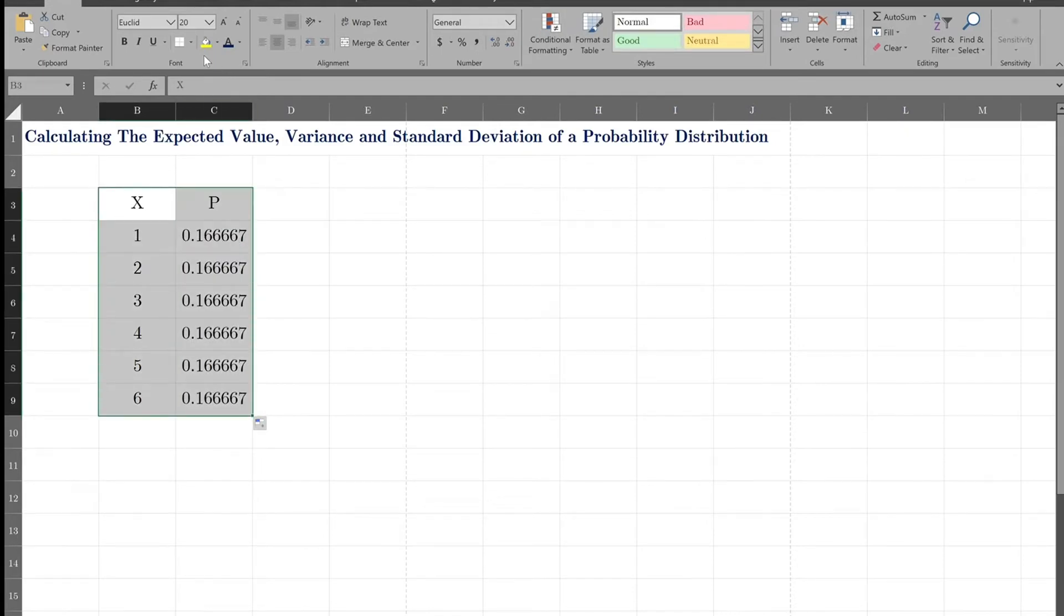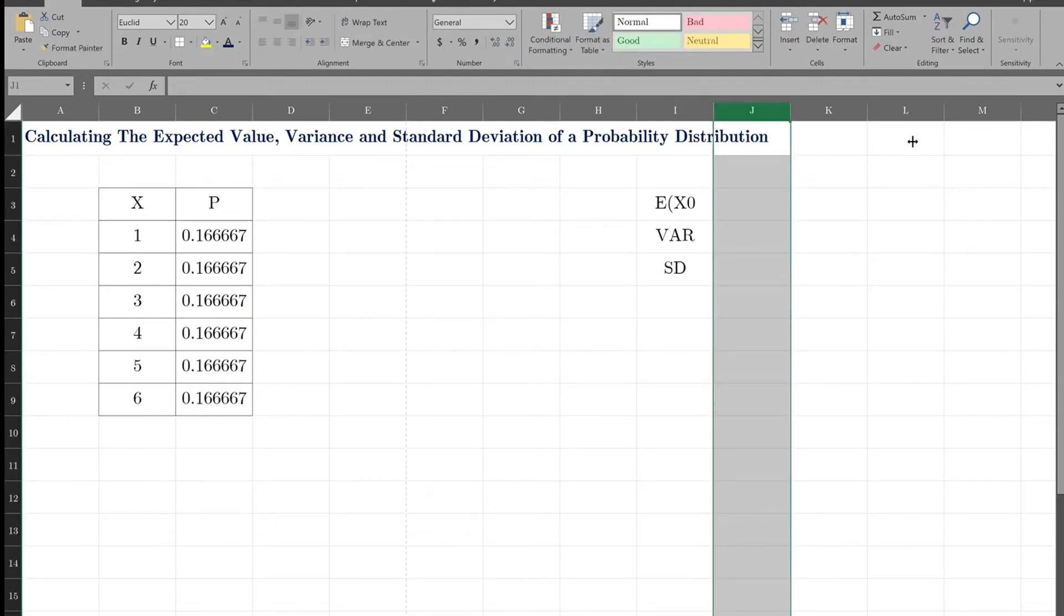So here's our probability distribution. Here's our probability distribution, and now I'm going to calculate the expected value, the variance, and the standard deviation. Alright, let's begin.